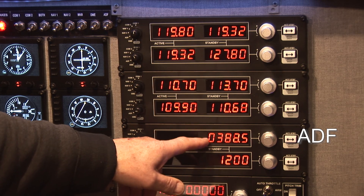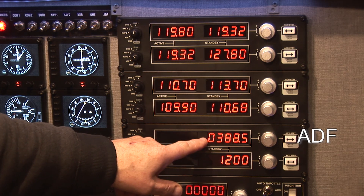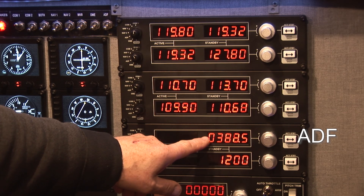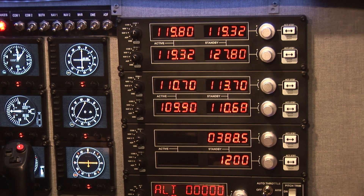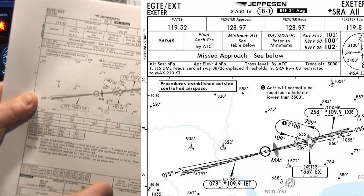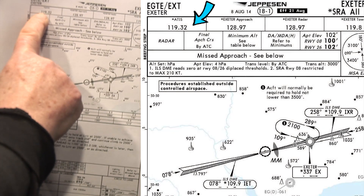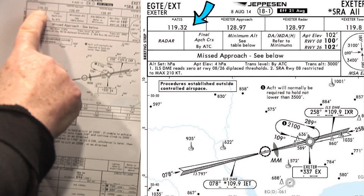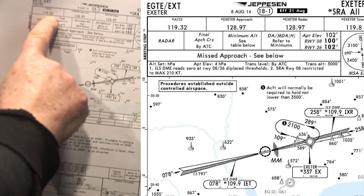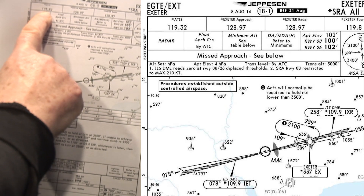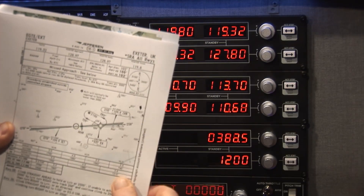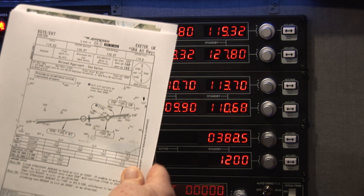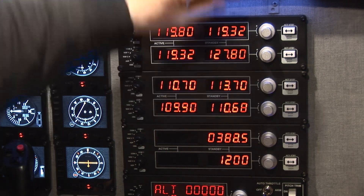The Automatic Direction Finder is always pointing towards something that is transmitting constantly. If we look at this chart here, at the top left it says ATIS is on frequency 119.32. ATIS is the Automated Terminal Information Service. Let's listen to that and see what it tells us. So that's 119.32 — here's 119.32.